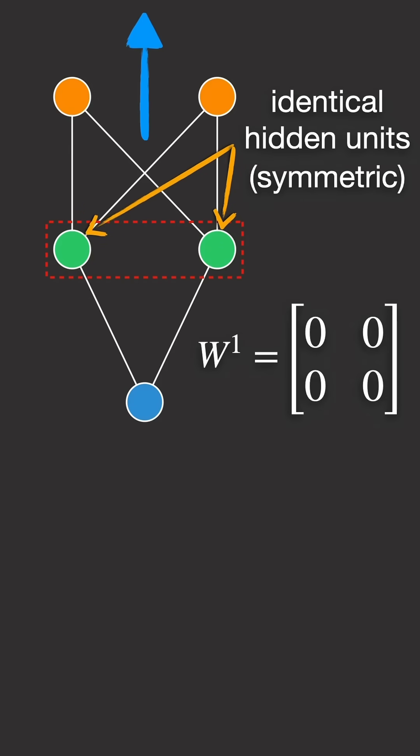During backpropagation, the derivatives for each hidden unit remain the same, causing them to learn the same features.